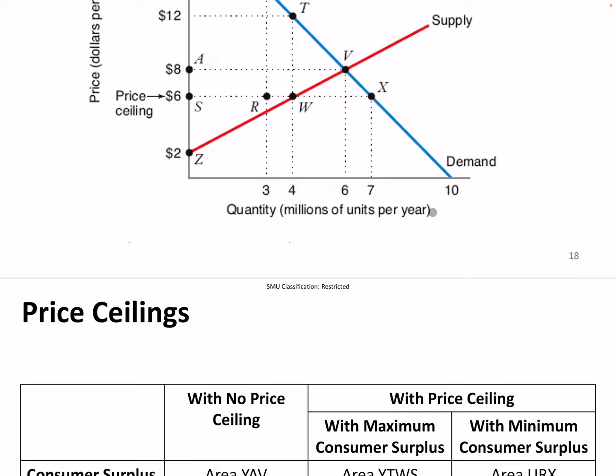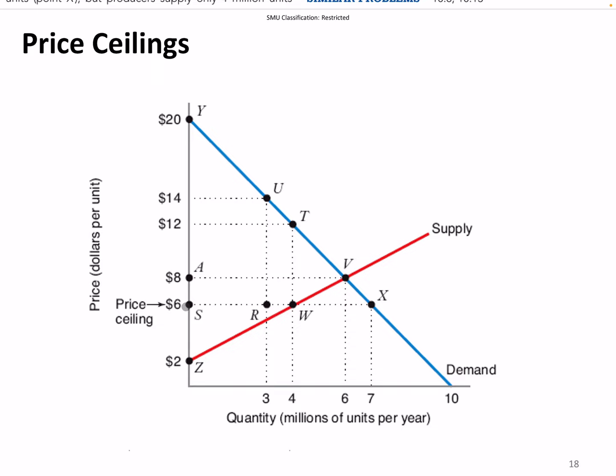Let's say the price ceiling is six dollars and we'll do the welfare analysis. We call this price ceiling binding because it is effective — it is lower than the equilibrium price. If it's higher than the equilibrium price it's meaningless, because anyway the market will go to the equilibrium.